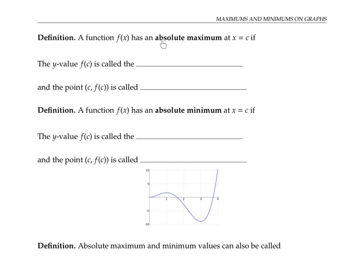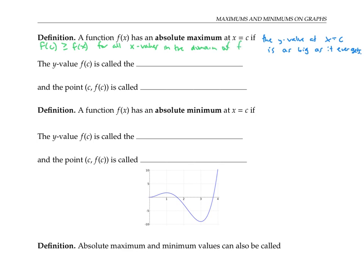A function f of x has an absolute maximum at the x value of x equals c, if the y value at x equals c is as big as it ever gets. We can write this more precisely by saying that f of c — that's the y value at x equals c — is bigger than or equal to f of x, that's the y value at some other x value, for all x values in the domain of f. That biggest y value f of c is called the absolute maximum value for f.